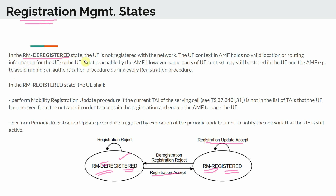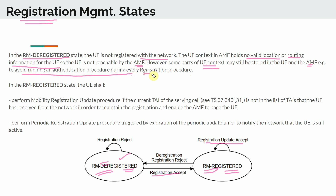In the RM-Deregistered state, the UE is not registered with the network — for example, a scenario where the UE is powered off. The UE context in the AMF holds no valid location or routing information for the UE, so the UE is not reachable by the AMF. However, some parts of the UE context may be stored in both the UE and the AMF to avoid running an authentication process during the registration procedure.